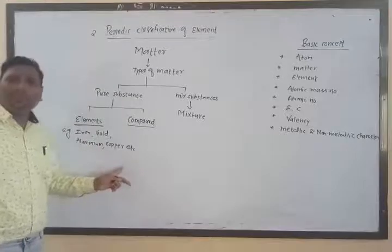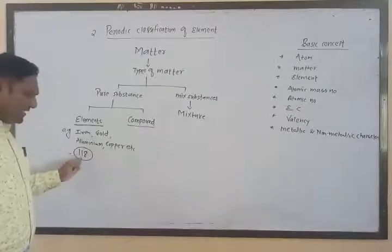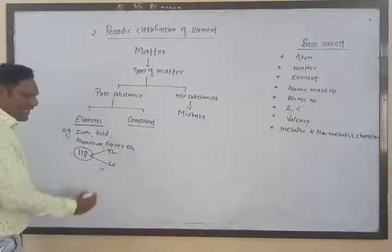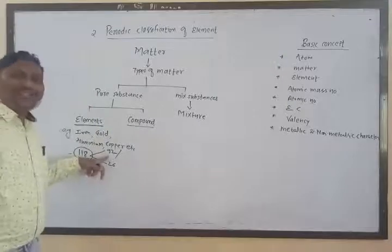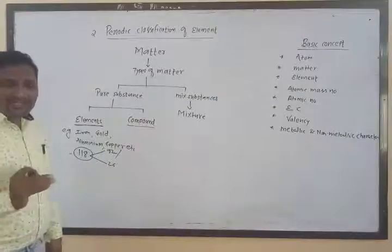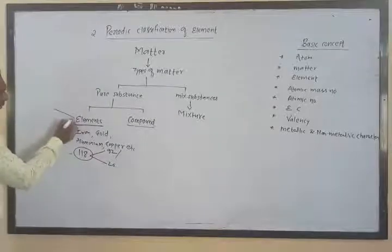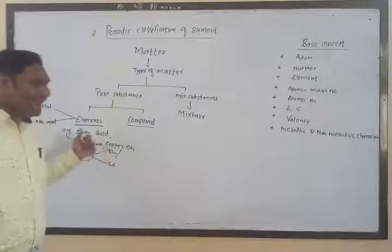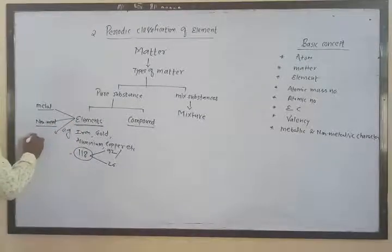Till date, 118 elements exist. Out of these, 92 are naturally occurring and 26 are artificially discovered in the laboratory by scientists. The first traditional classification of elements was given by Lavoisier in the form of metals and non-metals.